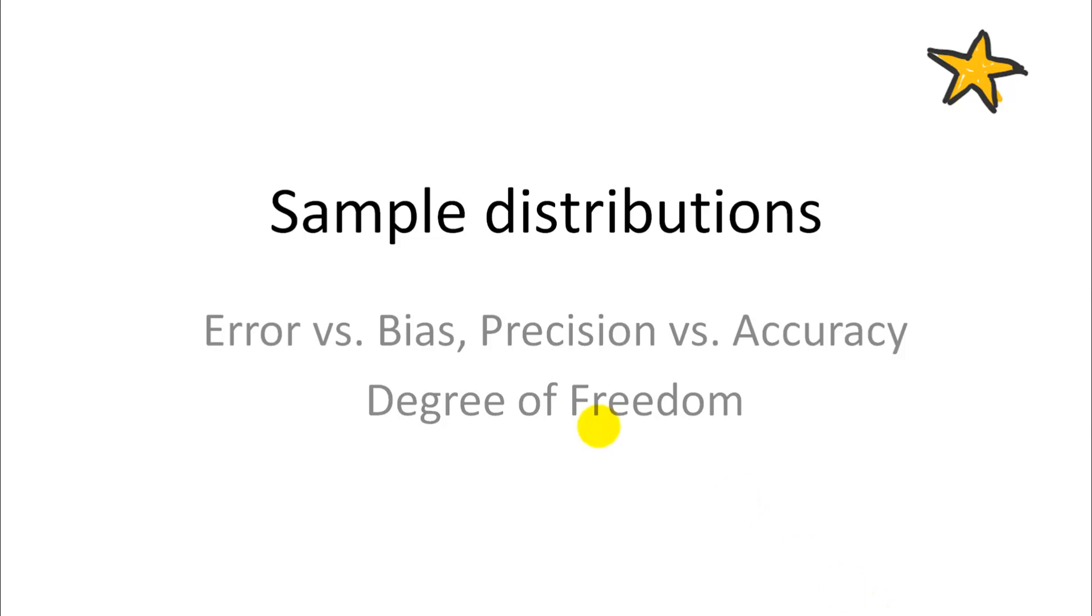This video is about sample distributions and I mark this with a star because there's a lot of important concepts contained in this video. We have a look at what that means, sample distribution. There are a bunch of statistical terms here: error versus bias, precision versus accuracy, and last but not least, we also want to talk a little bit more about degree of freedom. We already mentioned that in an earlier video.